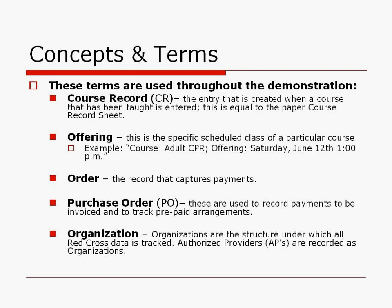A few concepts and terms used throughout this presentation. A course record is an entry created when a course has been taught — the same as a paper course record sheet. An offering is the specific scheduled class of a particular course, for example a CPR class on Saturday, June 12th at 1pm. An order is a record that captures payment; one option is a purchase order which can be invoiced or prepaid and needs to be set up ahead of time with the Red Cross. An organization is the structure under which all Red Cross data is tracked. Authorized providers who work as independent authorized providers are their own organizations, and instructors can be linked with up to nine different organizations.